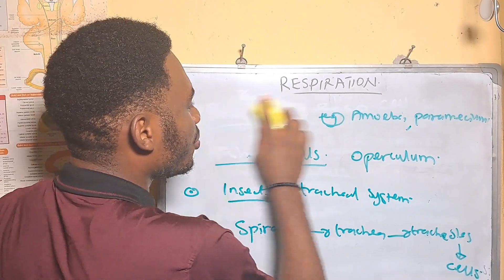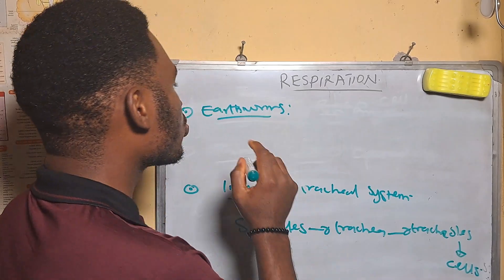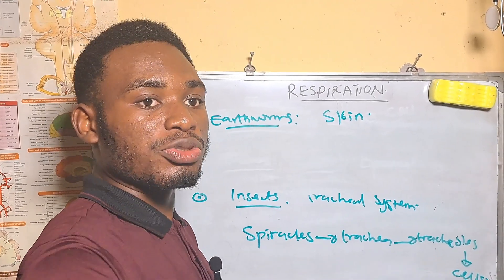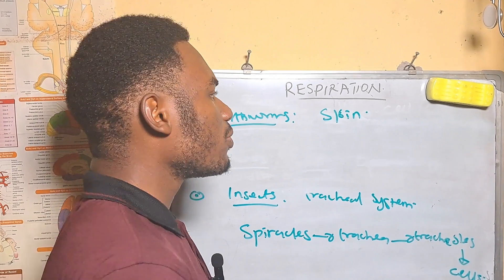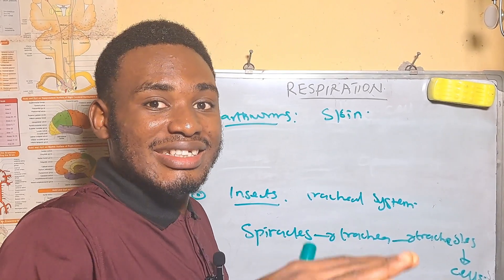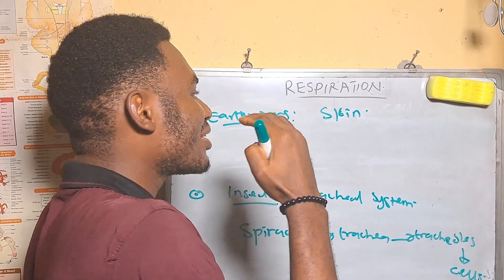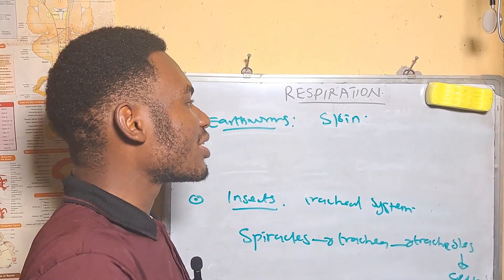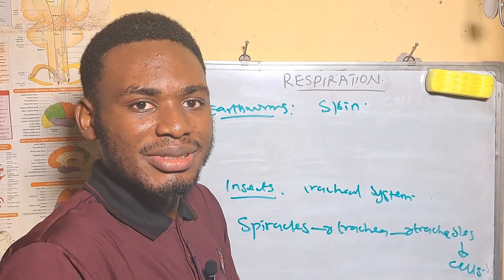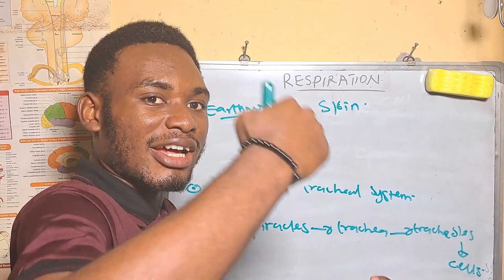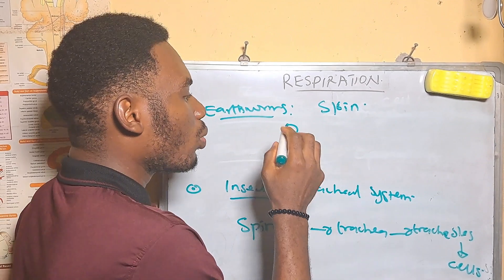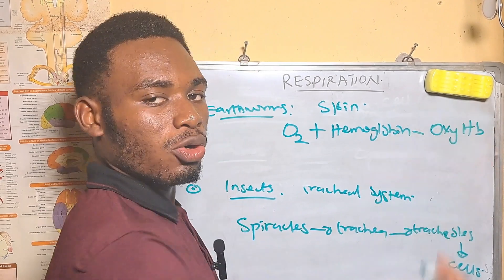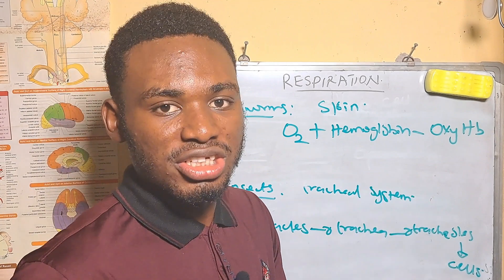For earthworms, they respire through their skin. The skin of earthworms is formed by a cuticle material produced by epidermal cells. These epidermal cells also produce mucus which lines the skin, making it moist — satisfying the respiratory membrane requirement. This moist skin traps oxygen, which then diffuses into the body. The oxygen then combines with hemoglobin to form oxyhemoglobin, which carries oxygen to the vital cells of the earthworm.